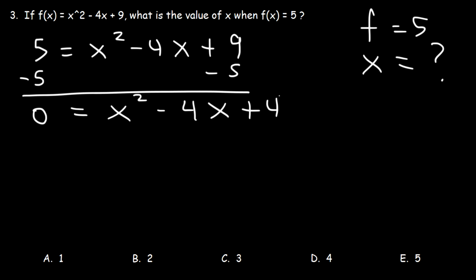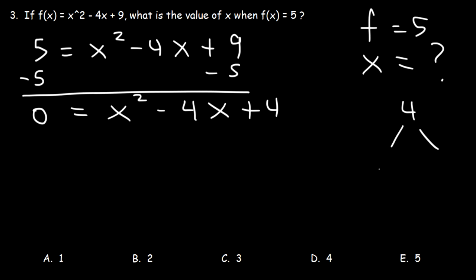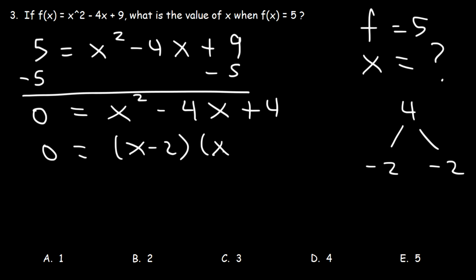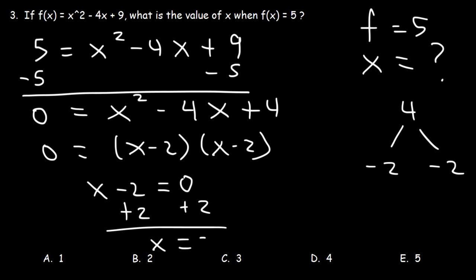We can find the answer by factoring the trinomial on the right. What two numbers multiply to 4 but add to the middle coefficient negative 4? The two numbers are negative 2 and negative 2. So to factor it, it's x minus 2 times x minus 2, which you can write as x minus 2 squared. To solve this equation, set each factor equal to 0. Because they're the same, we only do it once, and we can see that x is equal to 2.